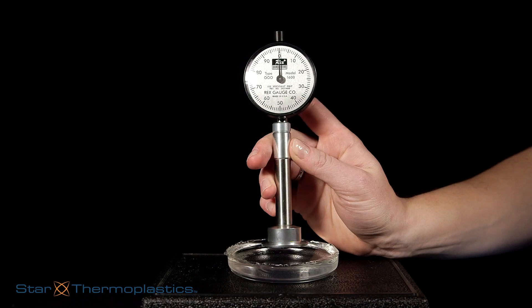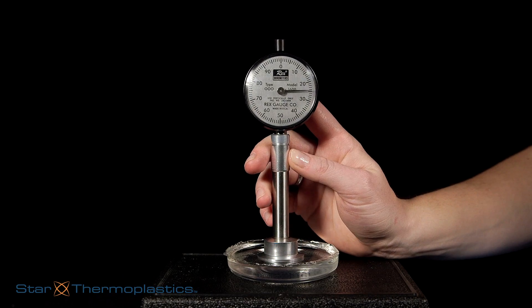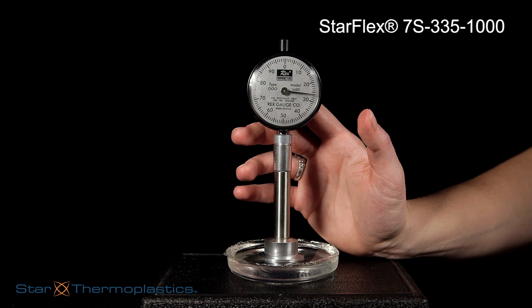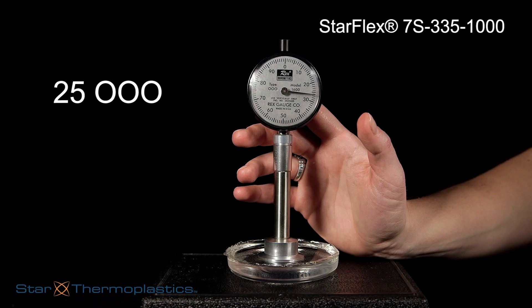One of our softest materials, which we test with a handheld durometer, Starflex 7S335-1000, when tested is a 25 on the Shore triple-aught scale.